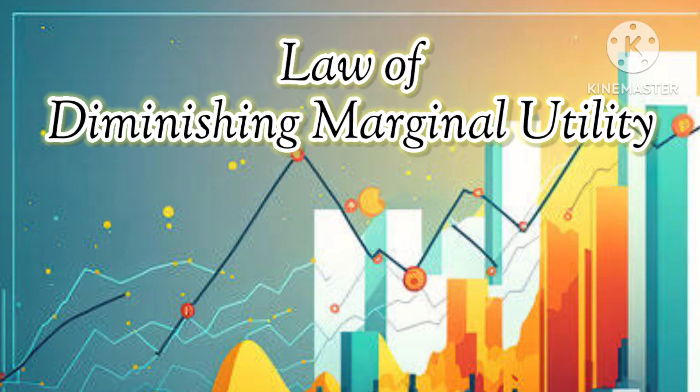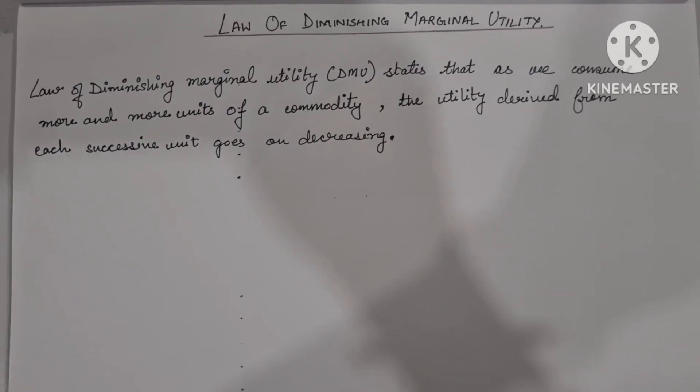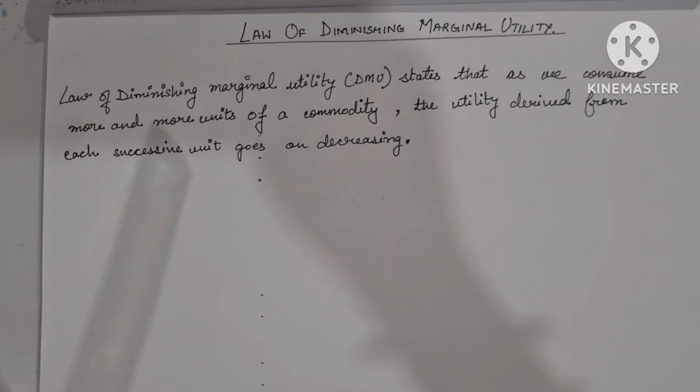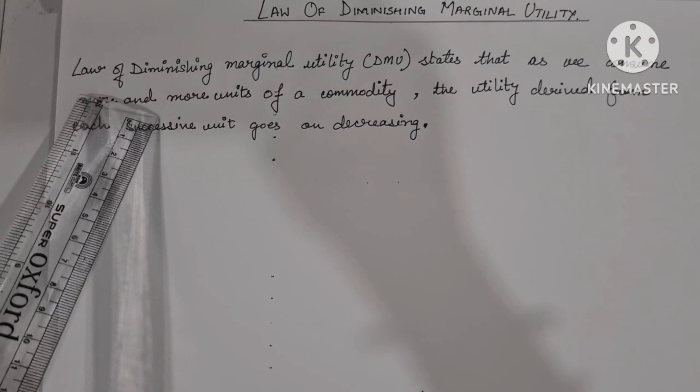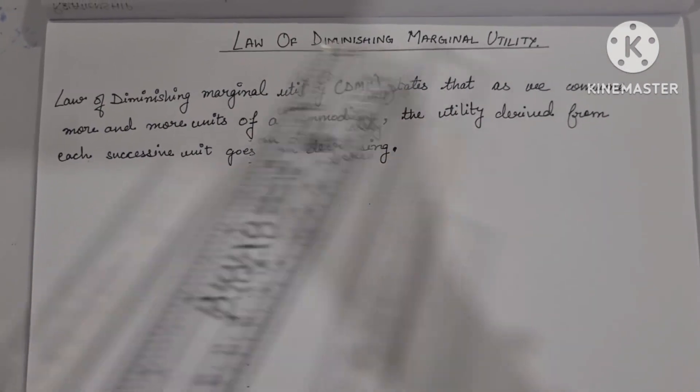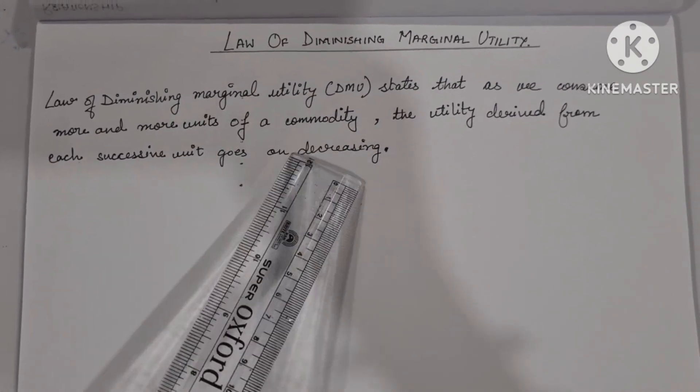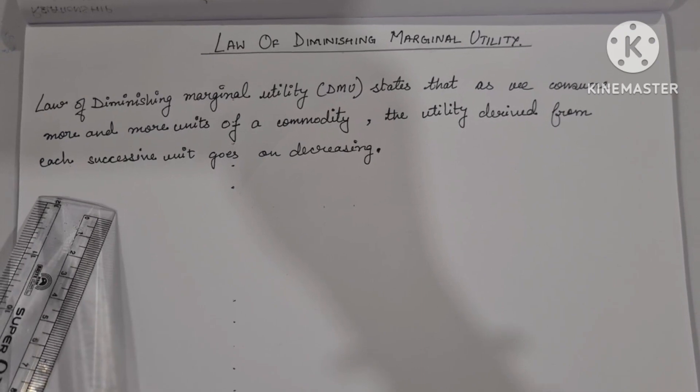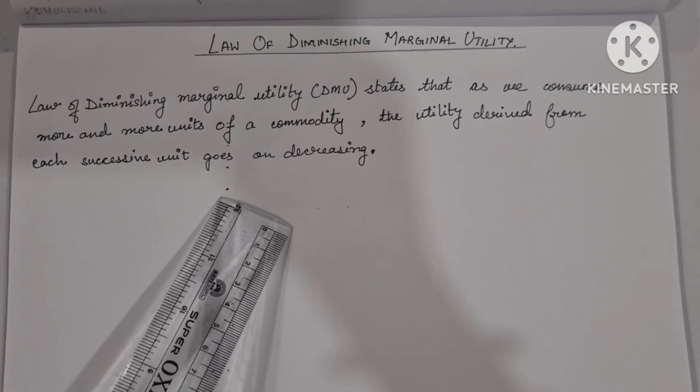In this video, I am going to explain the law of diminishing marginal utility with examples and assumptions. So first comes the law of diminishing marginal utility. Let me explain you first the law. Law of diminishing marginal utility states that as we consume more and more units of a commodity, the utility derived from each successive unit goes on decreasing.